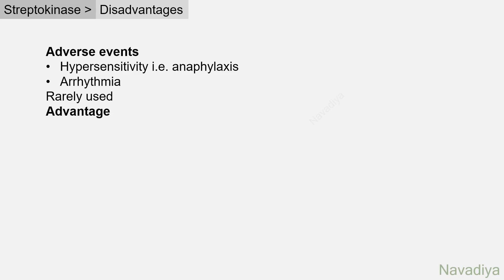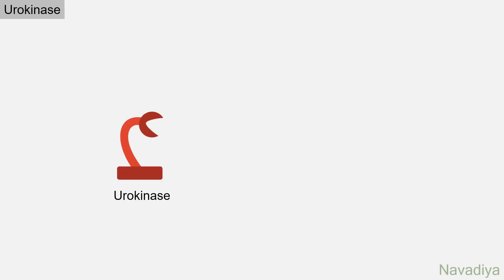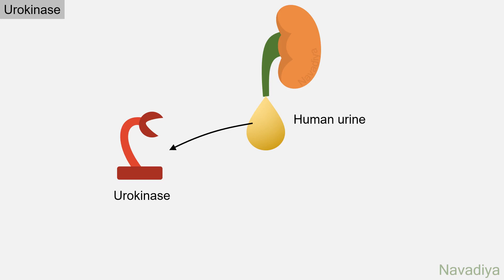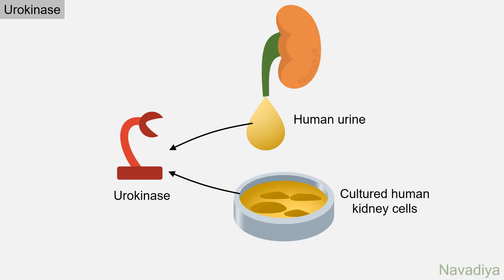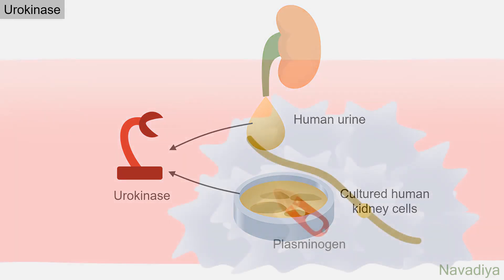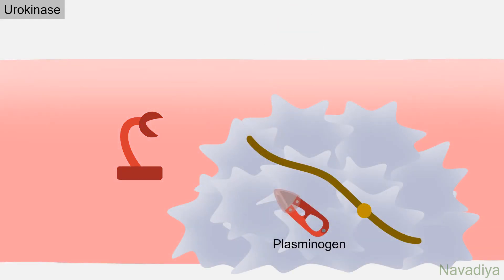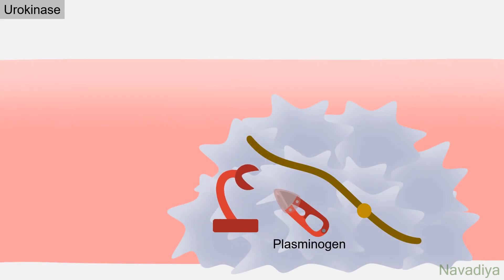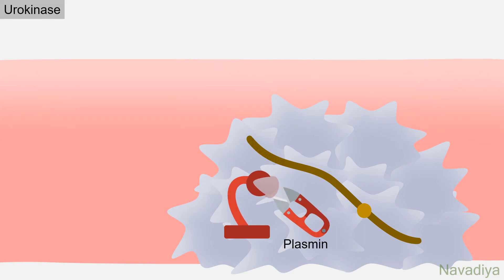The only advantage of streptokinase is that it is cheap. Now let's move to urokinase. Earlier it was obtained from human urine, but now it is obtained from cultured human kidney cells. In contrast to streptokinase, urokinase acts on plasminogen directly and converts it into plasmin. The later steps are the same: plasmin degrades fibrin, which leads to clot dissolution.